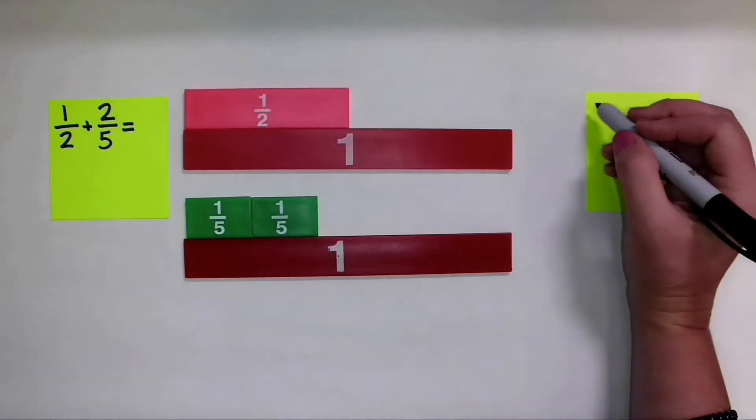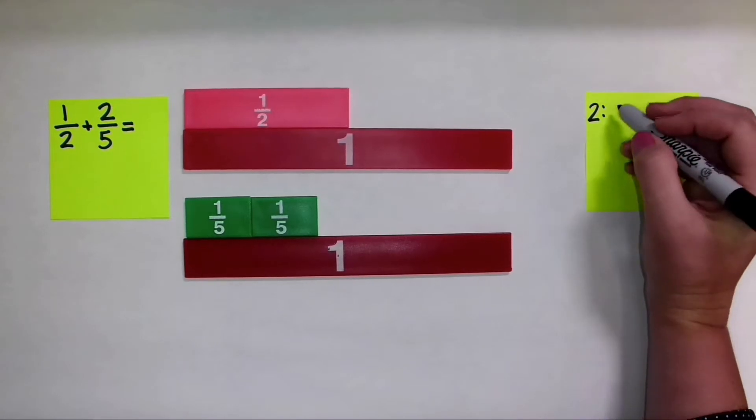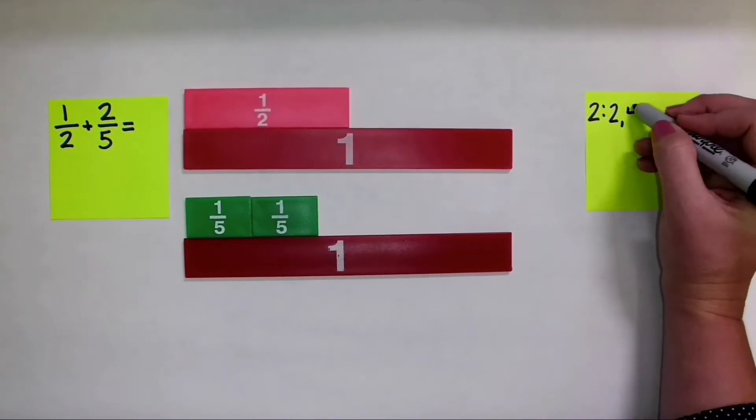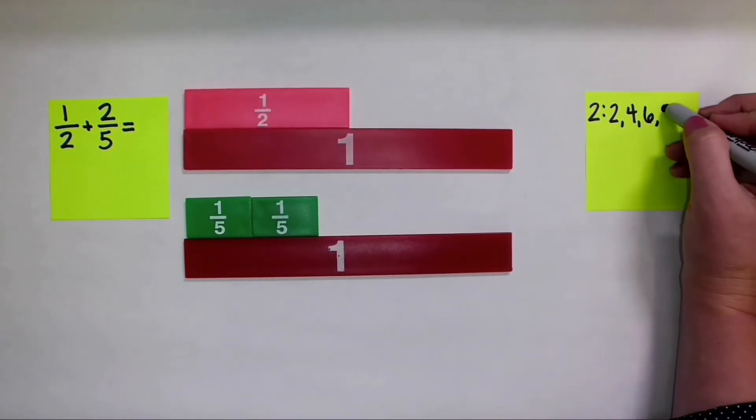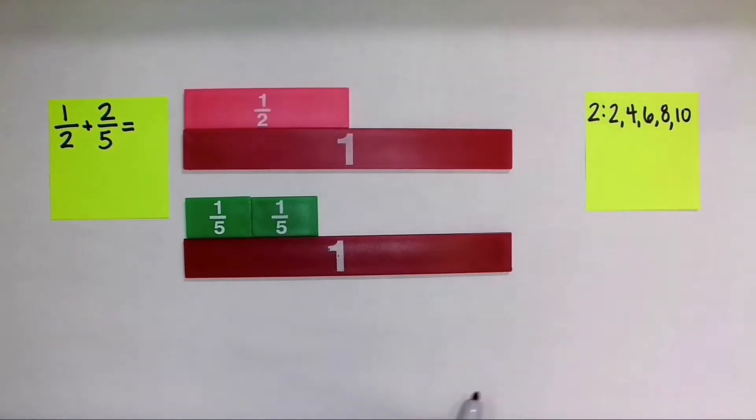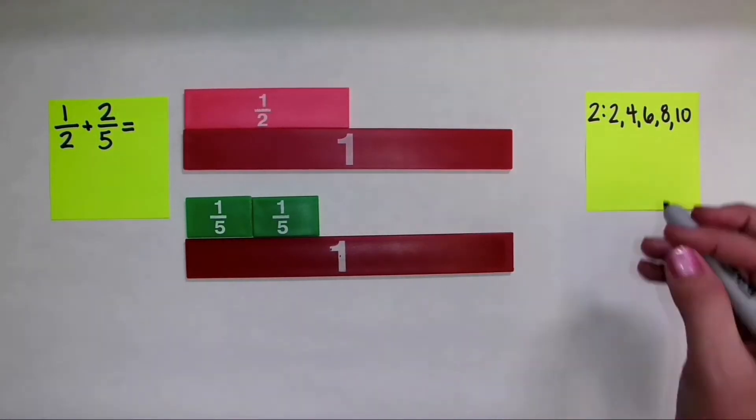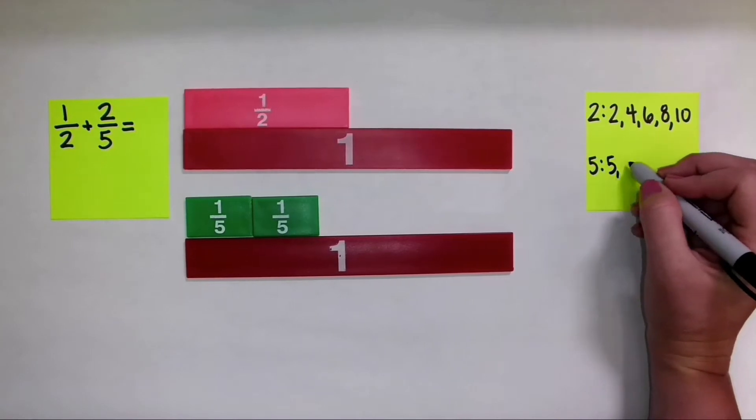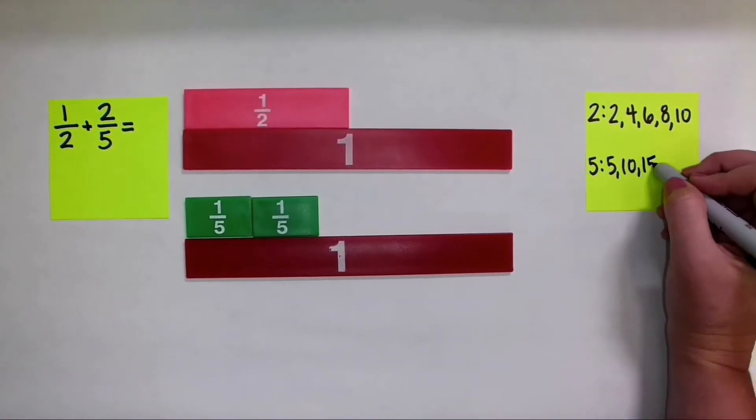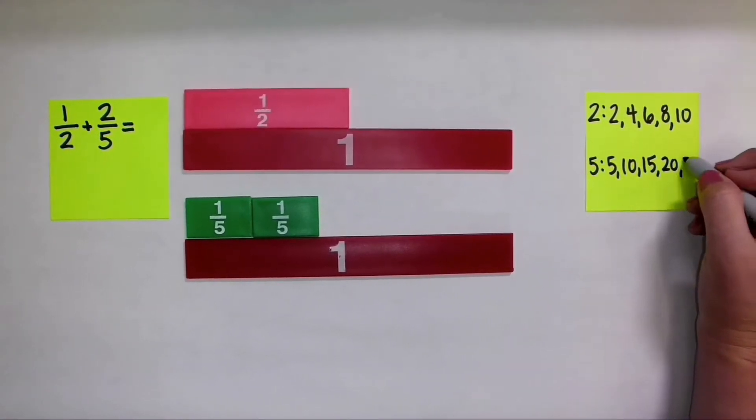I'm going to list out the multiples for a fraction with a denominator of 2. We almost always just list out the first 5 multiples. So I'll go ahead and list those out just like that. Now I'm also going to list out the multiples for a fraction with a denominator of 5. I'll go ahead and list out the first 5 here.